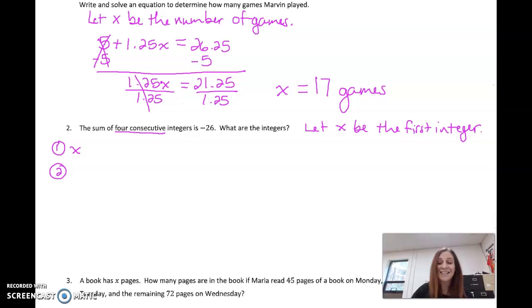Let x be the first integer. So I come over to the side here. My first integer is x. My second integer, if it's consecutive, it's the next one. So if it was 17, the next one's 18. If it was 18, the next one's 19. So we're always going to be adding one to it. My third integer, we're going to be adding one onto this one. So we're going to add two on. Our fourth consecutive integer, we're going to add three on.